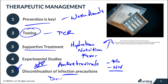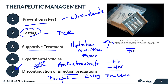Regarding discontinuation of infection precautions: the CDC currently recommends two negative PCR tests and complete resolution of all symptoms before droplet precautions can be discontinued. This does not necessarily mean the patient is ready for discharge — it means they are no longer considered a transmission risk. Always follow your facility's specific policy, which will align with CDC and WHO guidelines.